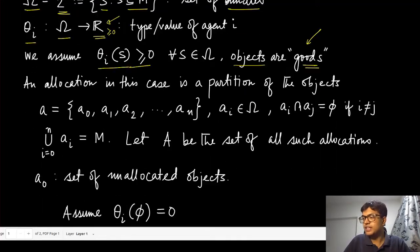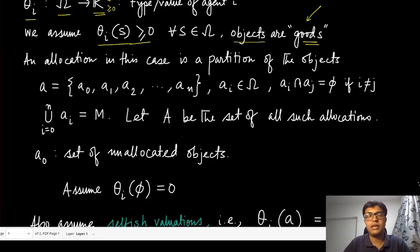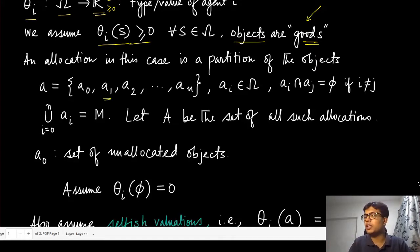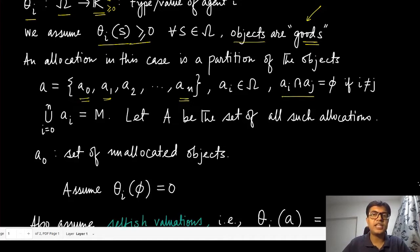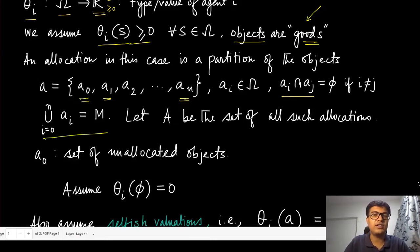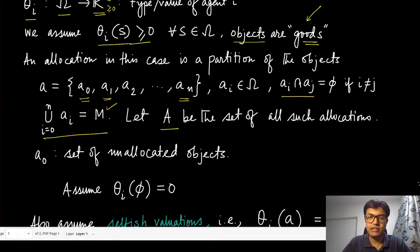In this setup, an allocation in the combinatorial auction is a partition of these objects. It is a partition of the m objects into n+1 bins: bins 1 through n correspond to which bundle goes to which agent, and the 0th bin is the set of unallocated objects. All the sets a_i and a_j are disjoint, so if an object goes to one agent it cannot go to another. The union of all components of the allocation equals m — all objects are in exactly one partition. A is the set of all such allocations.